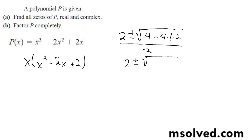So 2 plus or minus ends up being negative 4 over 2, which simplifies down to 1 plus or minus i.